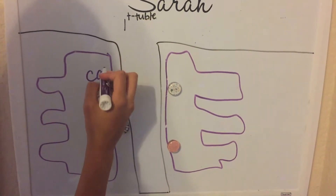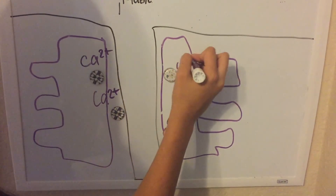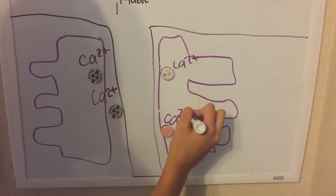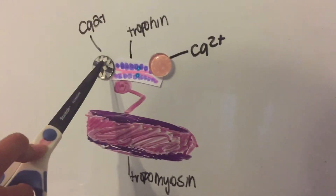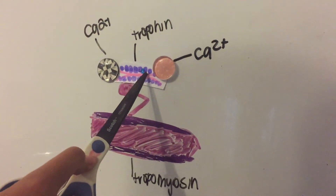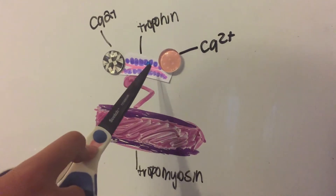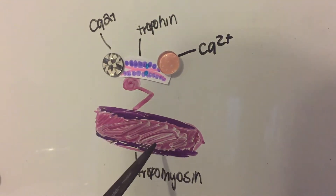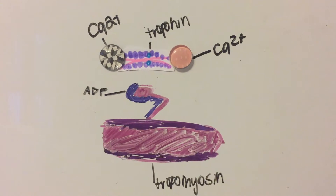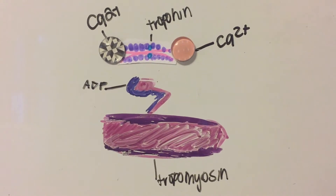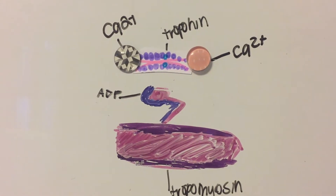The calcium binds to the troponin, which changes and removes the blocking action of the tropomyosin. This contraction occurs because of the sliding filament theory, and sarcomeres are shortened.